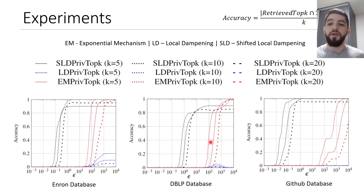This is an application where the utility function is correlated to the sensitivity. So, in this case, the shifted local dampening mechanism, as we would expect, outperforms the exponential mechanism. And more specifically, it reduces the use of the privacy budget by 2 to 4 orders of magnitude when compared to the exponential mechanism.